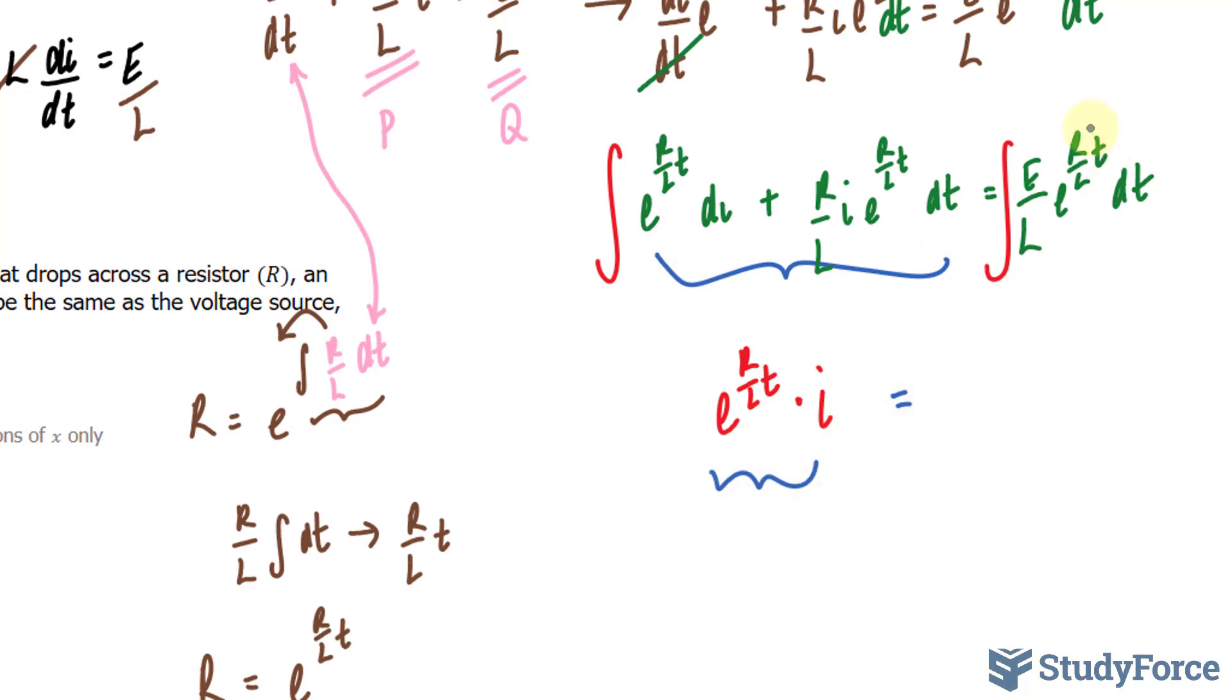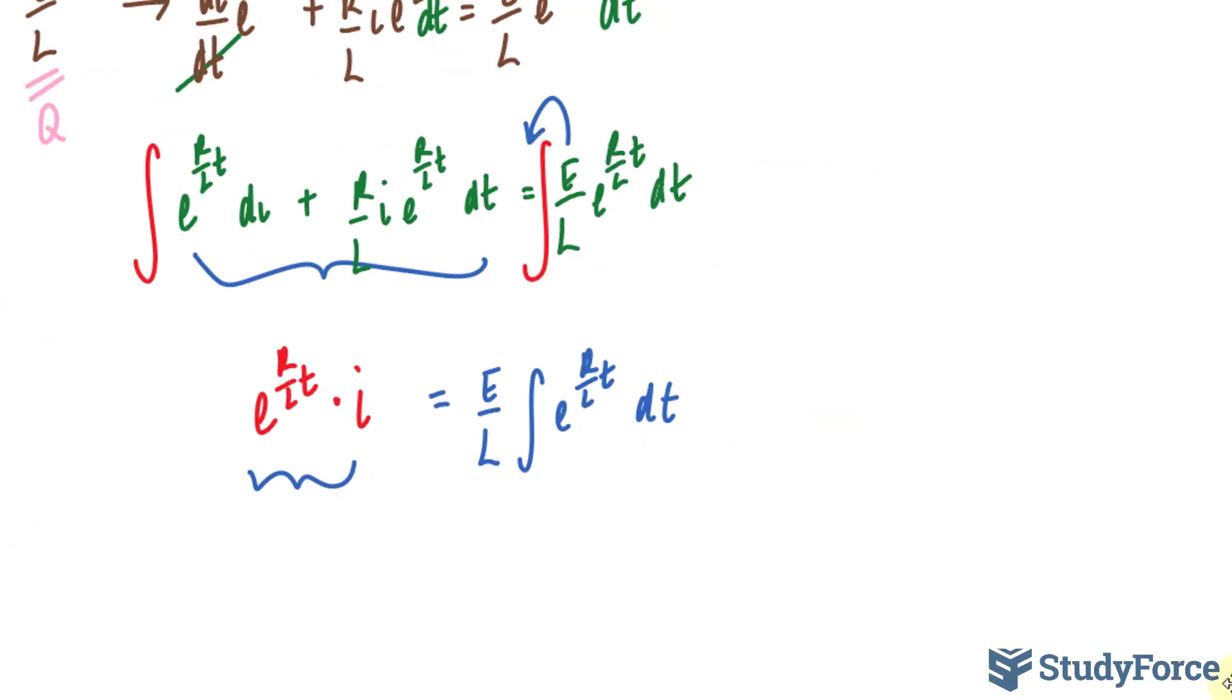Is equal to, and now we have to integrate the right side. We can start by pulling out E over L, which are constants. We have E over L times the integral of e to the power of R over LT. Of course, don't forget the dt. Now to integrate simple exponential functions like this, we need to do a simple U substitution, where I set U is equal to R over LT. Recognizing that R over L is a constant, and taking the derivative of both sides with respect to T, we end up with dU is equal to R over L dt. I'll solve for dt by dividing both sides by R over L, and that gives me L over R dU is equal to dt.